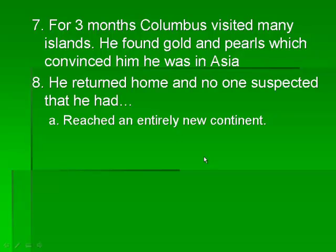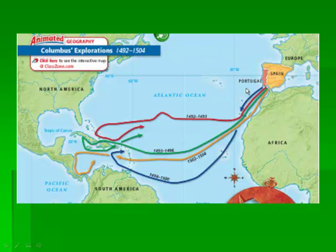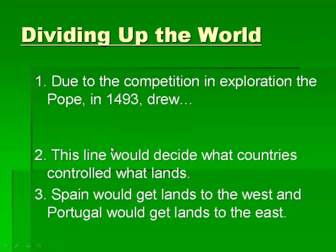This sparks a lot more exploration, and Columbus goes back four times. He never actually lands on the mainland of North America — he does get to Central America and he touches a little bit of South America, but he never gets up to North America. We'll talk about who does in just a little bit. But this starts a lot of arguing between countries, because Portugal says this is our land, and Spain says no, this is our land.